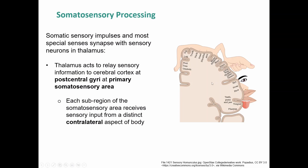The post-central gyrus handles sensory information via the homunculus, which shows where each body part's sensory information is processed. Starting with the mouth, teeth, and gums, moving through the face, nose, eyes, hands, fingers, wrist, forearm, elbow, upper arm, shoulder, head, neck, trunk, hip, leg, foot, toes, and genitals. It's also important to note that processing is contralateral — sensory information from the left side of the body is processed on the right side of the brain.